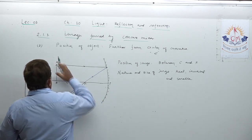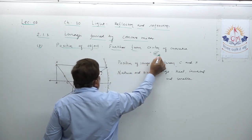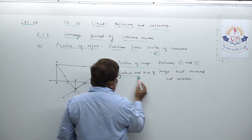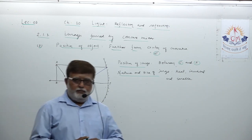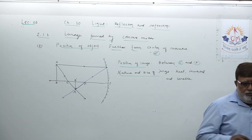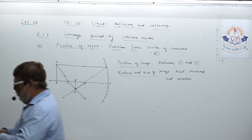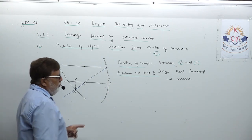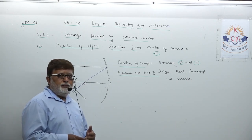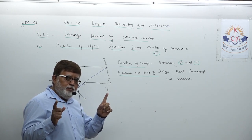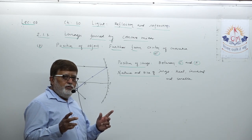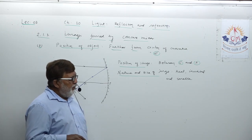Before we move to another diagram — position of object was further from center of curvature, image position is between C and F, nature and size of image is real, inverted, and smaller. Your mindset has to understand — just toss your thinking around the three facts. Nature and size: real, inverted, smaller. The other two facts then click: away from center of curvature, and image between F and C.